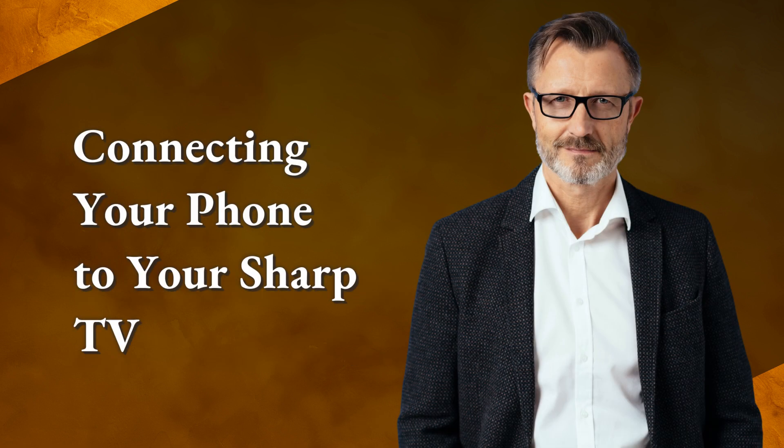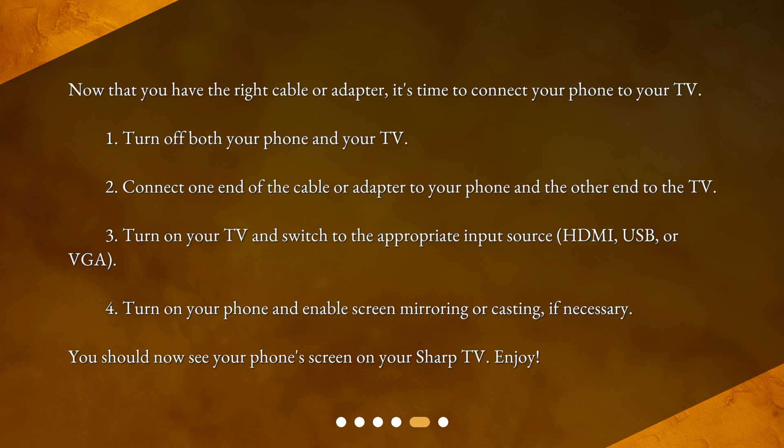Connecting your phone to your Sharp TV. Now that you have the right cable or adapter, it's time to connect your phone to your TV. One: Turn off both your phone and your TV. Two: Connect one end of the cable or adapter to your phone and the other end to the TV. Three: Turn on your TV and switch to the appropriate input source — HDMI, USB, or VGA. Four: Turn on your phone and enable screen mirroring or casting, if necessary. You should now see your phone's screen on your Sharp TV.